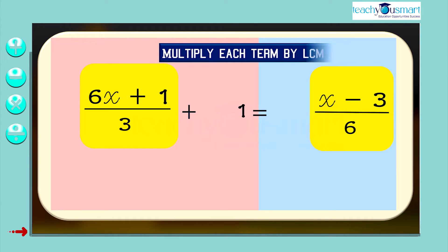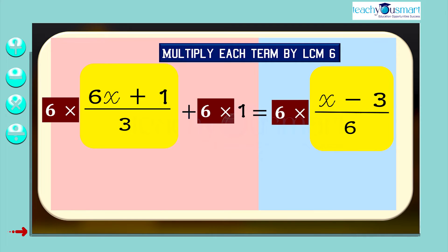Multiply each term of both sides of the equation by LCM 6. That is, 6 × (6x + 1)/3 + 6 × 1 = 6 × (x - 3)/6. That is, 2 × (6x + 1) + 6 = x - 3.